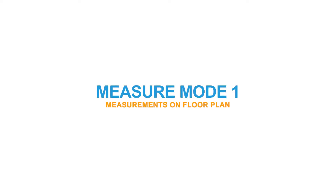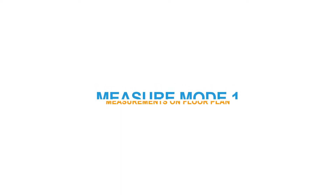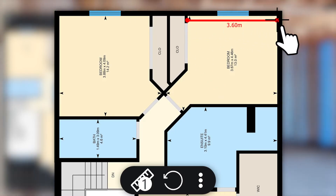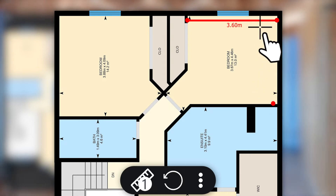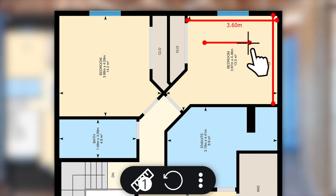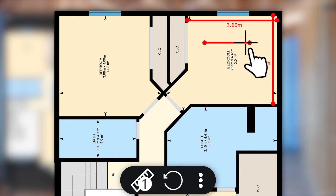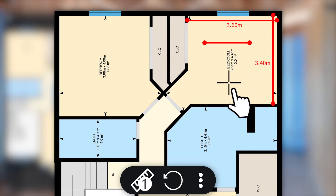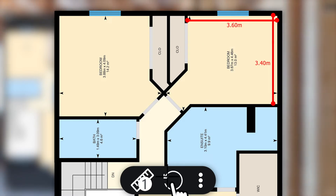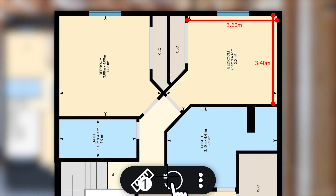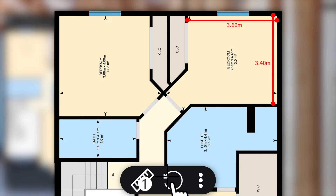Measure Mode 1: Click and drag on the floor plan to draw a line. This will allow you to measure between any two points. Measure anything on the floor plan and take as many measurements as you want. Clicking the undo button will erase previous measurements one by one, or click the ruler button to clear everything and get a clean slate.